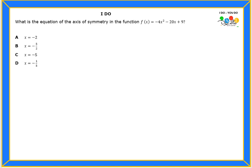Hello students, let's read the problem. It says, what is the equation of the axis of symmetry in the function f(x) equals negative 4x squared minus 20x plus 9?